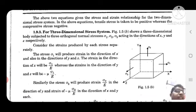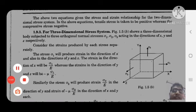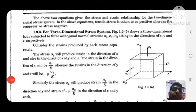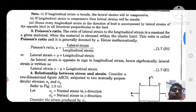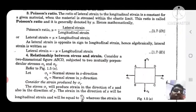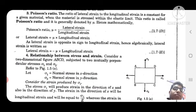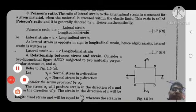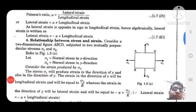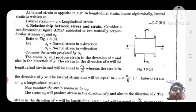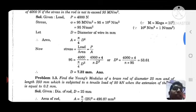Similarly, you can follow the three-dimensional stress system for a three-dimensional body. The key point is Poisson's ratio: lateral strain divided by longitudinal strain. If one dimension is increasing, another one is obviously decreasing. That is the main point. Now let us look at one numerical problem.